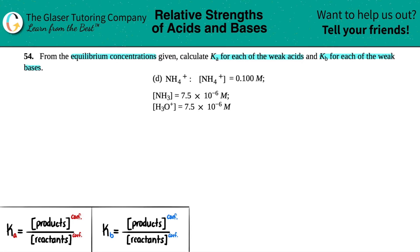First, we need to figure out if we're dealing with a weak acid or a weak base, because then we can solve for Ka for acid or Kb for base.